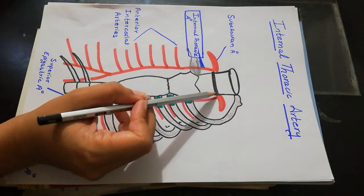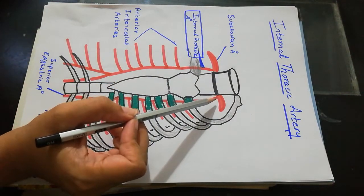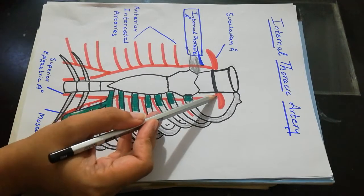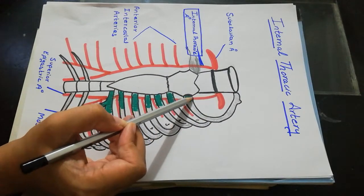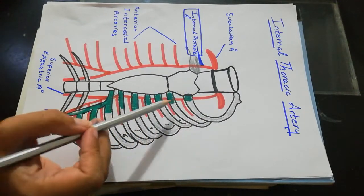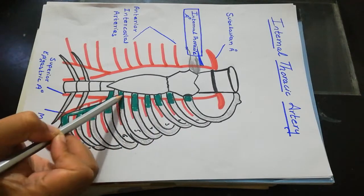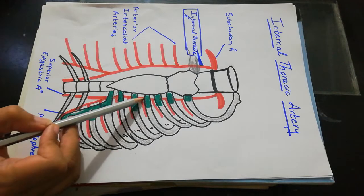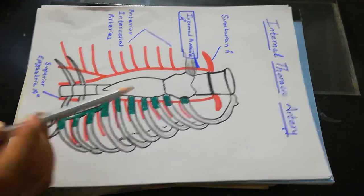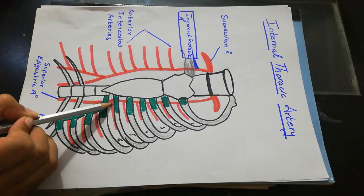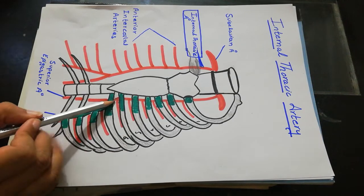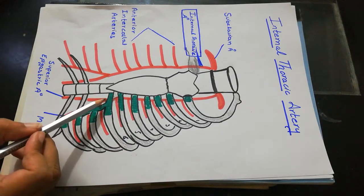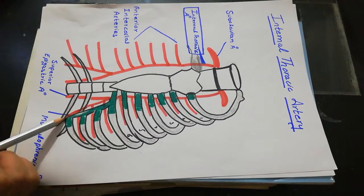The internal thoracic artery arises from the inferior aspect of the subclavian artery. It descends medially behind the first costal cartilage, then descends vertically downward behind the 2nd, 3rd, 4th, 5th, and 6th costal cartilages up to the 6th intercostal space. At the level of the 6th intercostal space, it divides into the superior epigastric artery or musculophrenic artery.